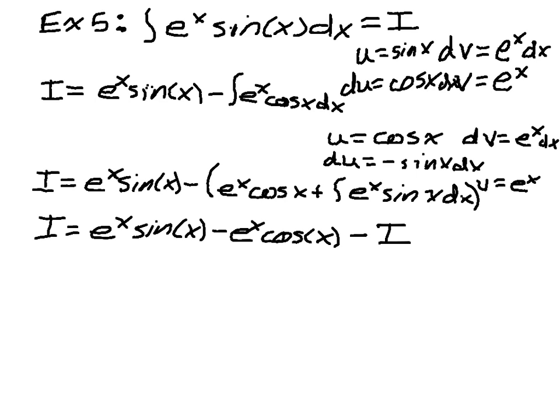So if I bring that over, I get that 2i is equal to e to the x, sine of x, minus e to the x, cosine of x.